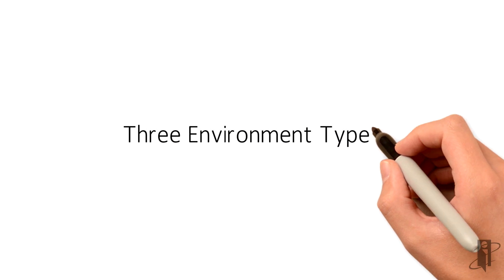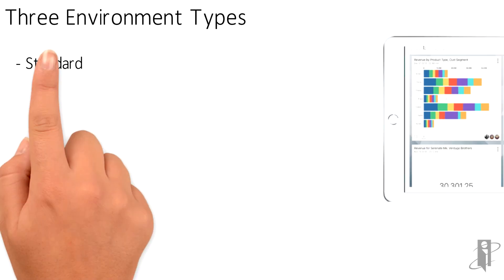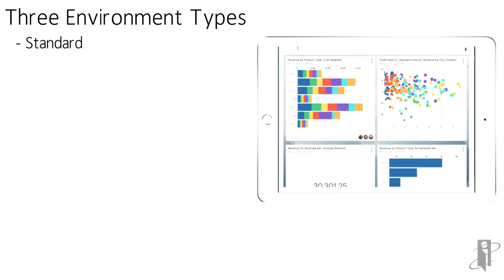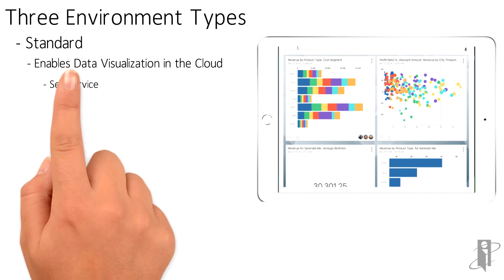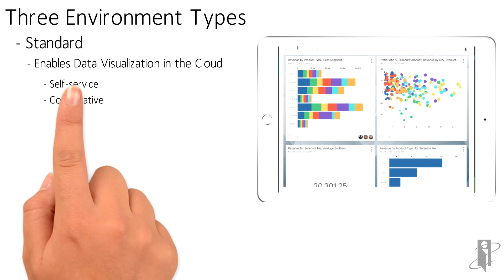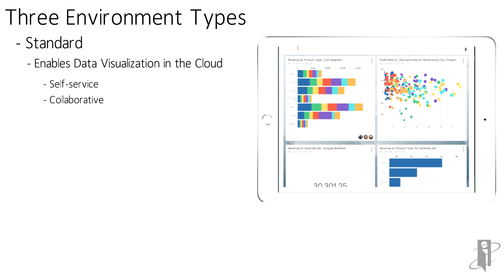There are three environment types. First, we have Standard, and you want to use Standard if you're going to be just doing data visualization in the cloud. Data visualization allows you to have self-service and collaboration. With all of these editions, you also get Data Visualization Desktop, so you can have single-user data visualizations available as well.